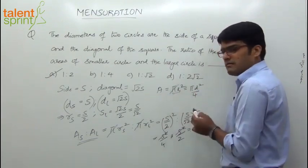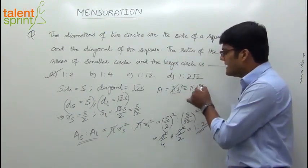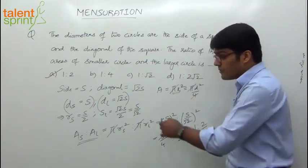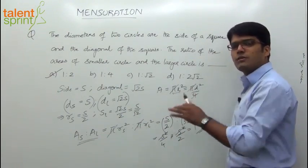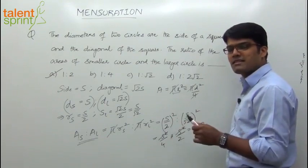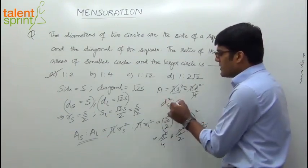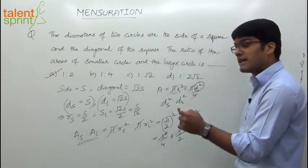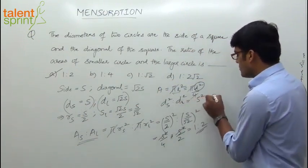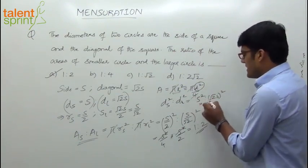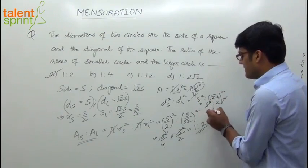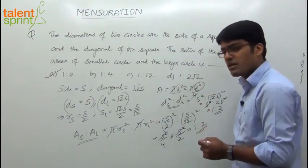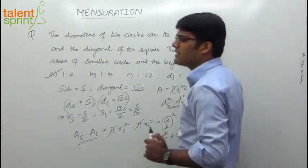If we take in terms of diameter, area of a circle is pi d squared by 4. Pi is a constant and 4 is also a constant, so what affects the area is diameter squared. So a smart approach: take the ratio of the two diameters squared. Area of smaller circle to area of larger circle equals S squared to (root 2S) squared, which is S squared to 2S squared. S squared cancels, giving 1 to 2. Both methods give option A — 1 is to 2 — as the correct answer.